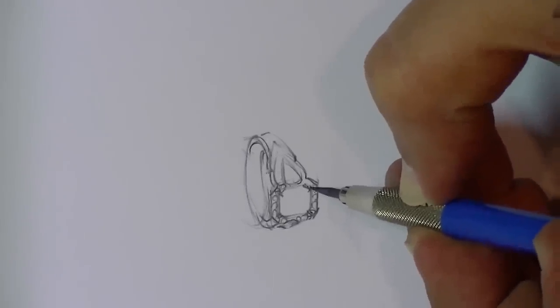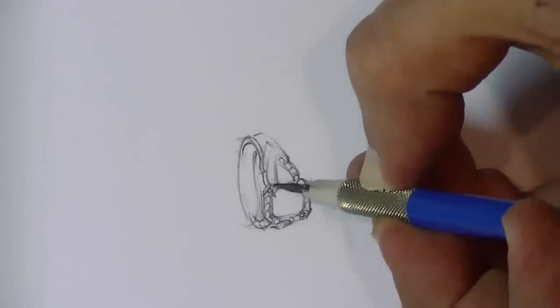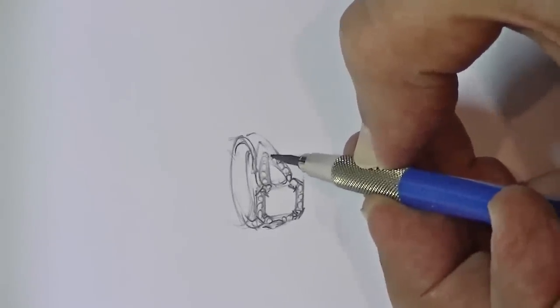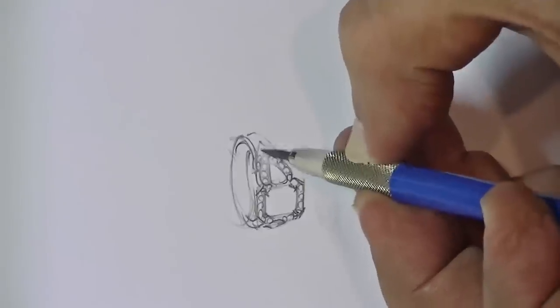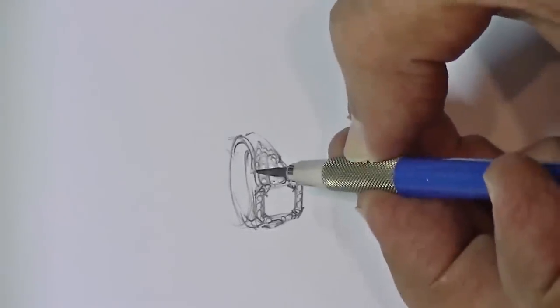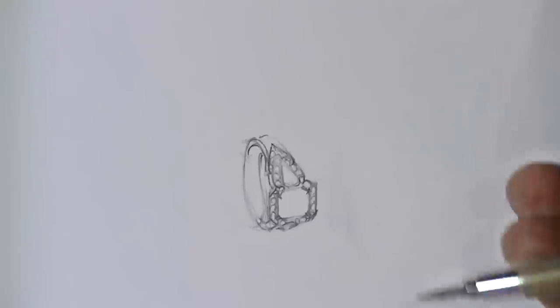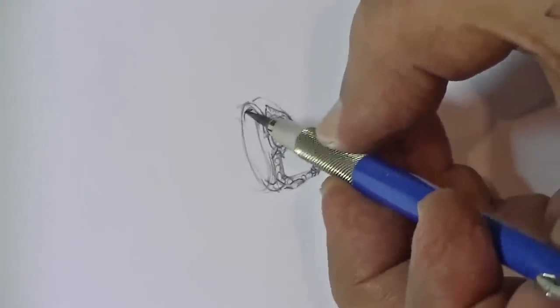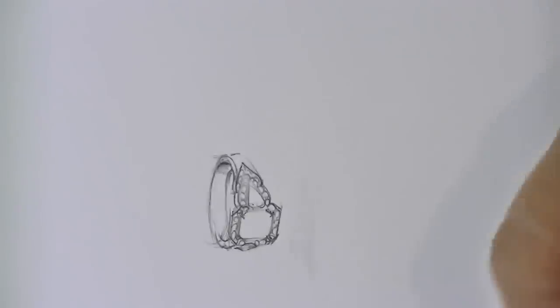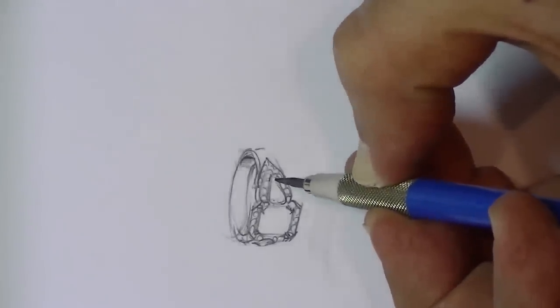That will frame the center stone—they're quite small—and also around this pear shape, and again framing that with yet smaller diamonds. It's hard to see in this drawing. It's just a rough sketch, and it will give you an idea of what this might look like.